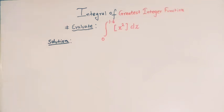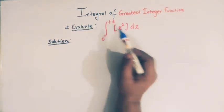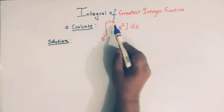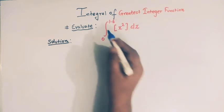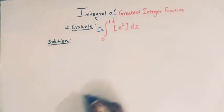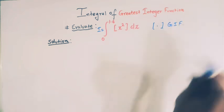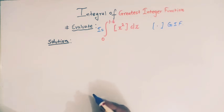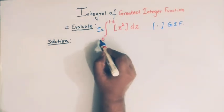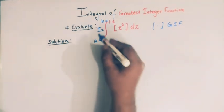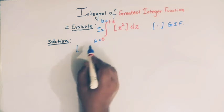Hello viewers. Today we will discuss an important conceptual problem in integration — the integration of the greatest integer function. We have to find the value of the definite integral from 0 to 1.6 of the greatest integer function of x squared. Let us denote this integral by I. The lower limit is 0 and the upper limit is 1.6.